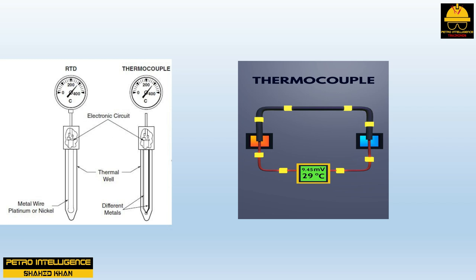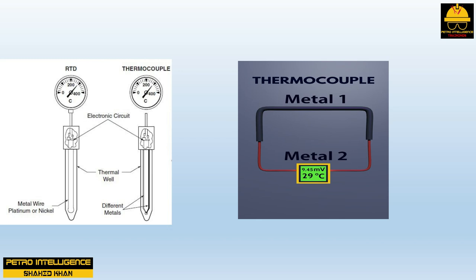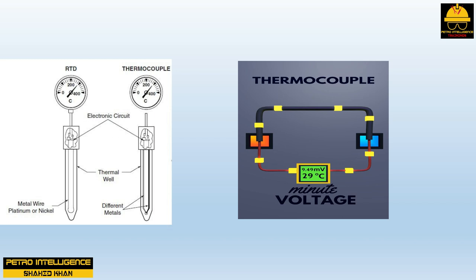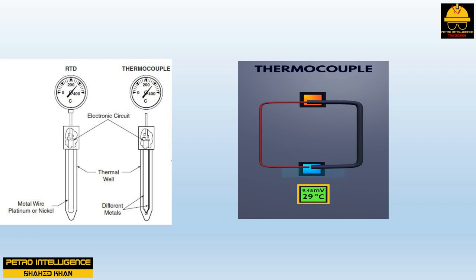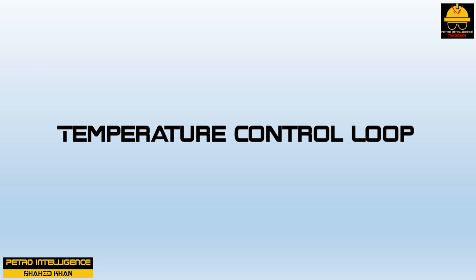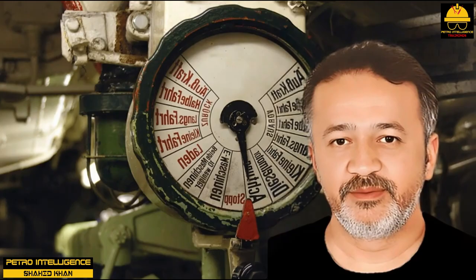Thermocouples are composed of two different types of metal and are designed to convert heat into electricity. When heat is applied to the connected ends, a low-level current is generated; the higher the temperature, the greater the current. Electric current is detected by the associated electronic circuit and converted to a corresponding temperature scale. Thermocouples come in several types; J-type and K-type are the most common, with K-type preferred for higher temperature measurements.